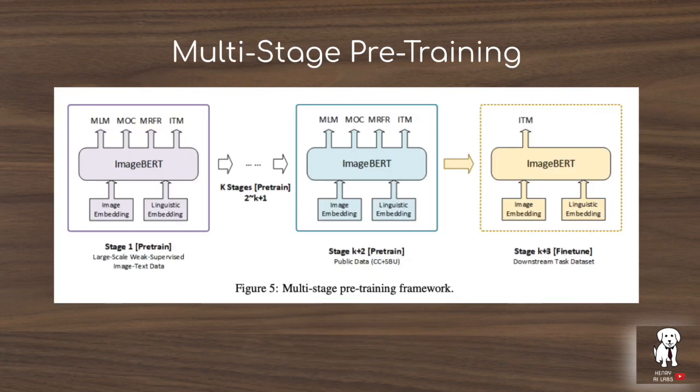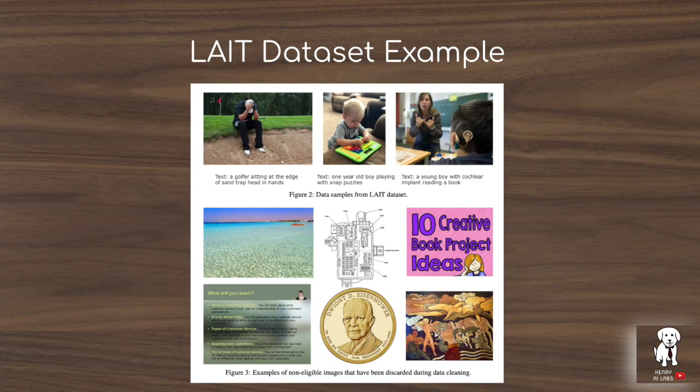ImageBERT is a transformer architecture that combines regions of interest extracted from a pre-trained Faster RCNN model with words tokenized using WordPiece, using self-attention across the entire visual-language input sequence. The self-supervised pre-training tasks include image-text matching, masked object classification, masked region feature regression, and the original BERT masked language modeling task on the text sequence.